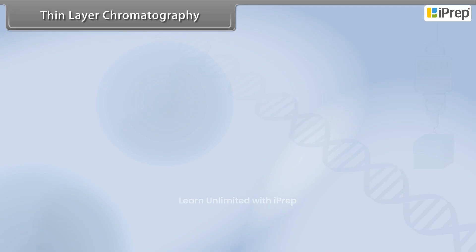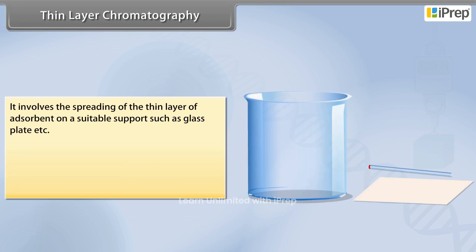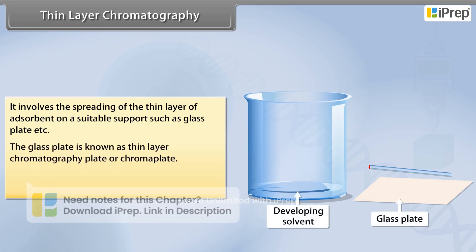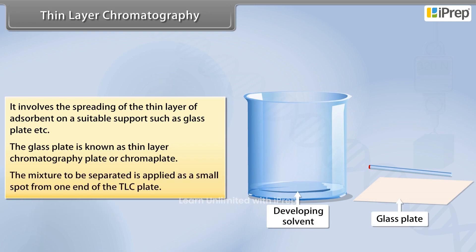Thin layer chromatography involves the spreading of a thin layer of adsorbent on a suitable support such as a glass plate. The glass plate is known as a thin layer chromatography plate or chromaplate.